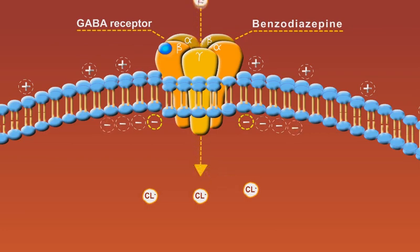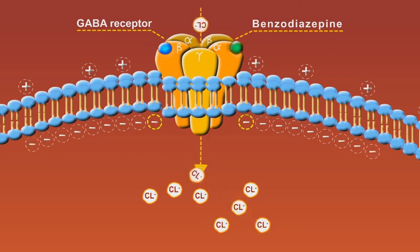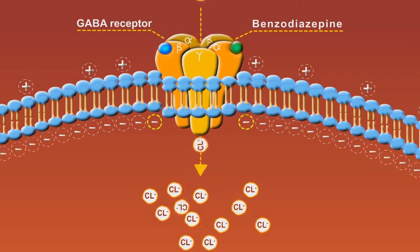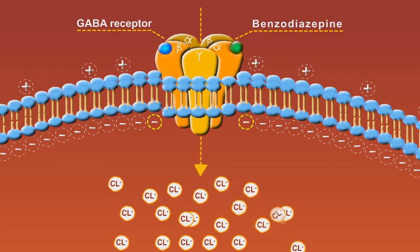This leads to hyperpolarization and therefore inhibition of the neuron. When benzodiazepines attach to the receptor, they increase the affinity and therefore the binding of GABA. This increases chloride channel opening frequency and results in the entrance of greater amounts of chloride ions, eventually leading to a greater neuronal inhibition.